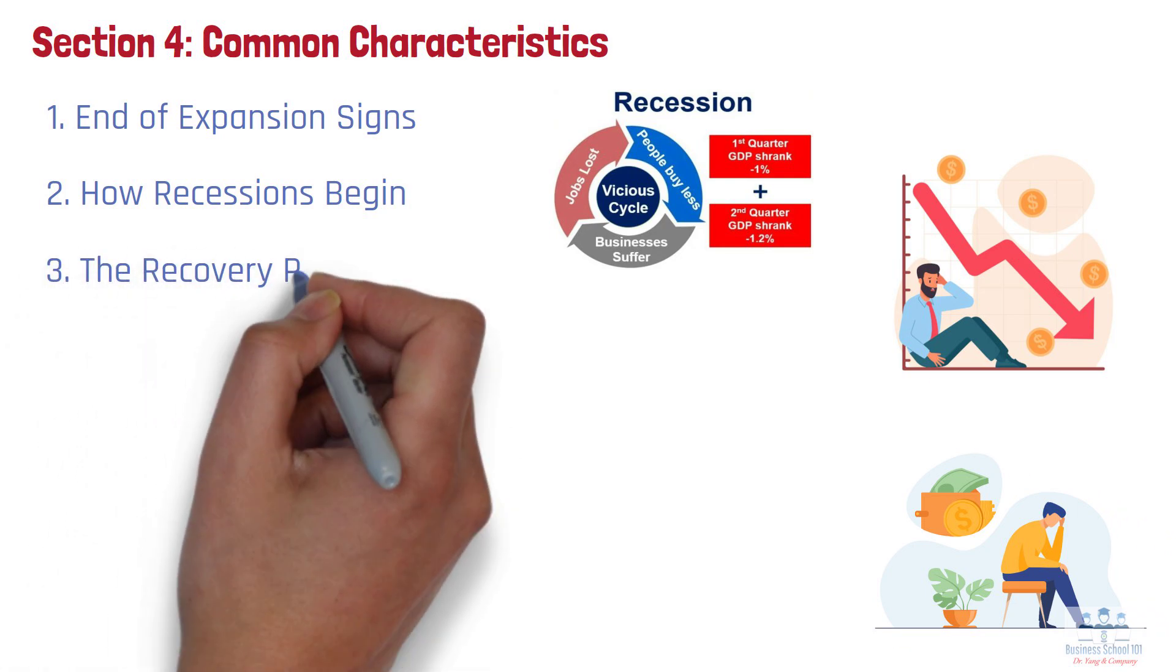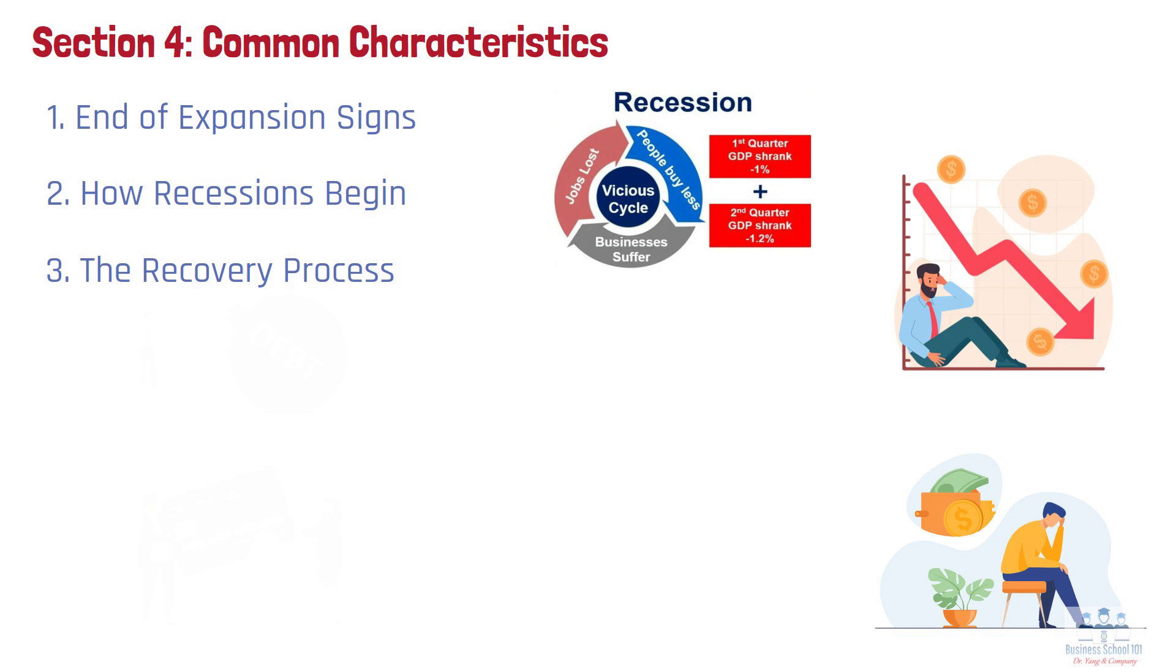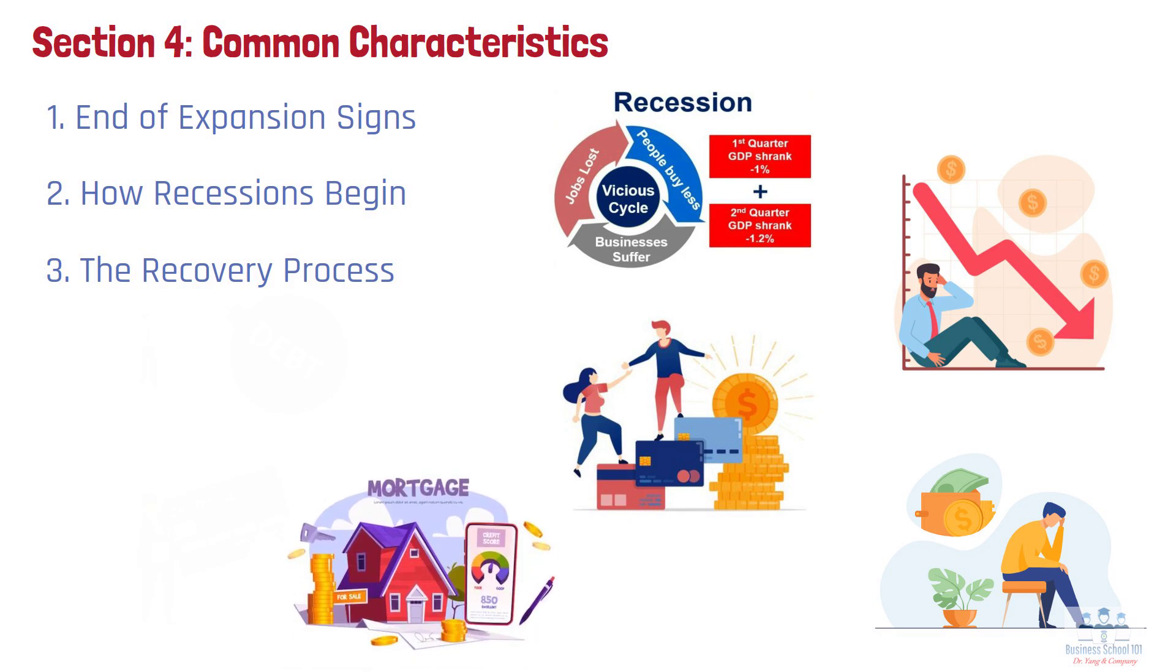Number 3: The Recovery Process. Eventually, though, things turn around. As the recession drags on, spending starts to stabilize, people pay down their debts, and lower interest rates make borrowing more attractive again. Households begin buying homes and durable goods, and businesses start investing in new equipment to prepare for the next boom. That's how the cycle typically resets.